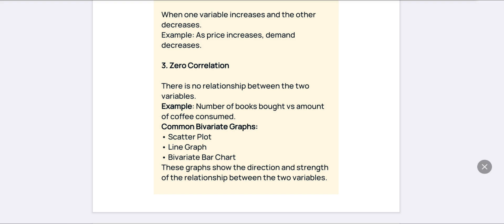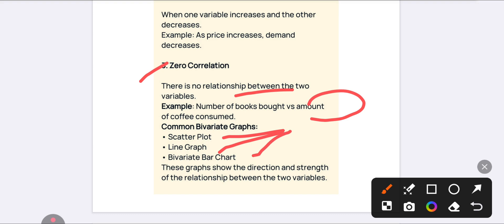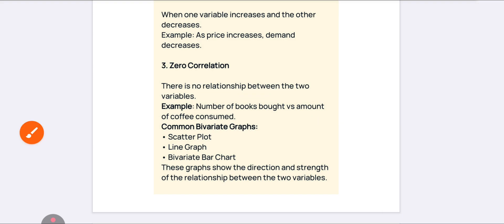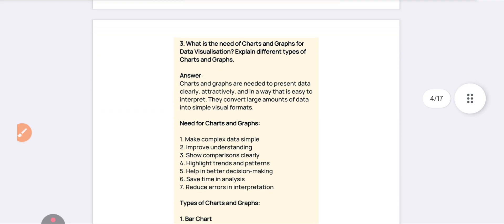Zero correlation is where there is no relationship between the variables — for example, the number of books bought versus the amount of coffee consumed, because there is no relation between them at all. Common bivariate graphs include scatter plots, line graphs, and bivariate bar charts, which show the direct relationship between two variables. This completes the second question.